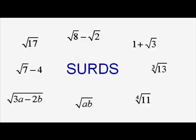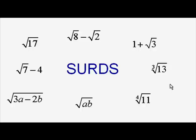All these expressions are called surds. Surds are just expressions which have got root signs. Most of the ones you'll meet have got the square root sign with no number outside, but sometimes you'll meet the cube root sign or other values like the fourth root sign. They're all called surds. In later videos, we're going to be looking at how we can manipulate surds and what the rules for handling surds are.